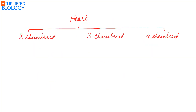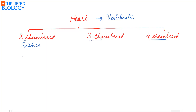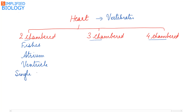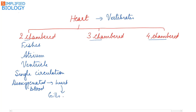The muscular heart is present in all vertebrates. It is either two-chambered, three-chambered, or four-chambered. The two-chambered heart is found in fishes, where the two chambers are the atrium and the ventricle. In fishes, single circulation is seen — deoxygenated blood is pumped from the heart to the gills where it gets oxygenated, and from there it is supplied to all parts of the body.